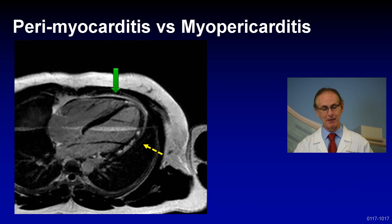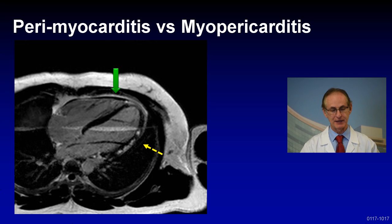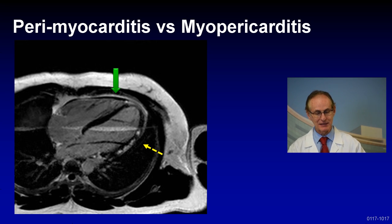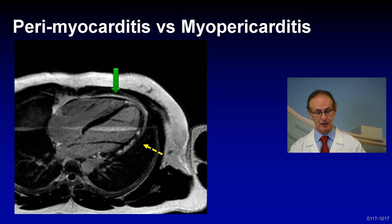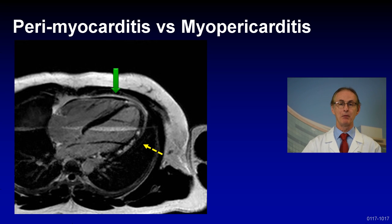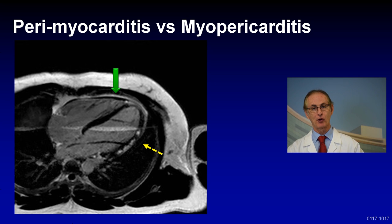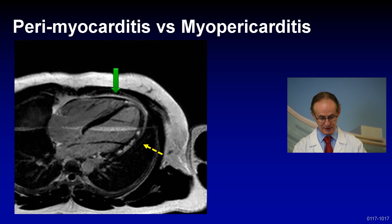We also have to remember the distinction between perimyocarditis and myopericarditis. Perimyocarditis means the predominant finding is in the muscle — an MRI example shows scarring in the muscle indicated by the yellow arrow, with a little pericarditis shown by the green arrow. Myopericarditis is a little more benign — mainly pericarditis with a little muscle involvement — and may be seen quite often in pericarditis syndromes.